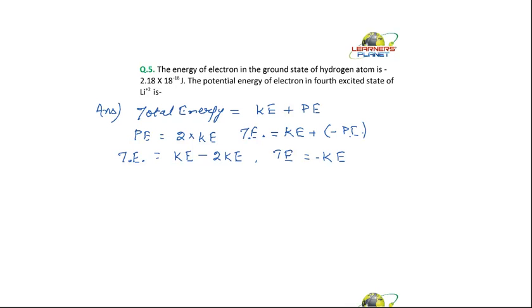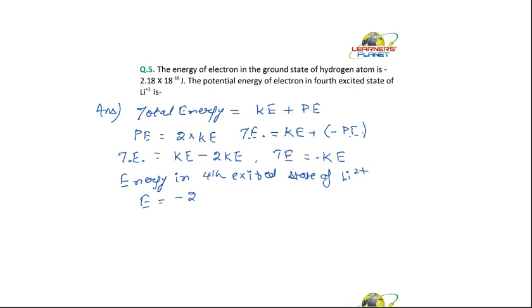We know the kinetic energy or the total energy in the ground state of hydrogen atom. What is asked is to find out the potential energy in the fourth excited state of lithium. So we need to find out the energy in the fourth excited state of Li²⁺. We have the expression: energy = −2.18 × 10⁻¹⁸ × Z²/N².